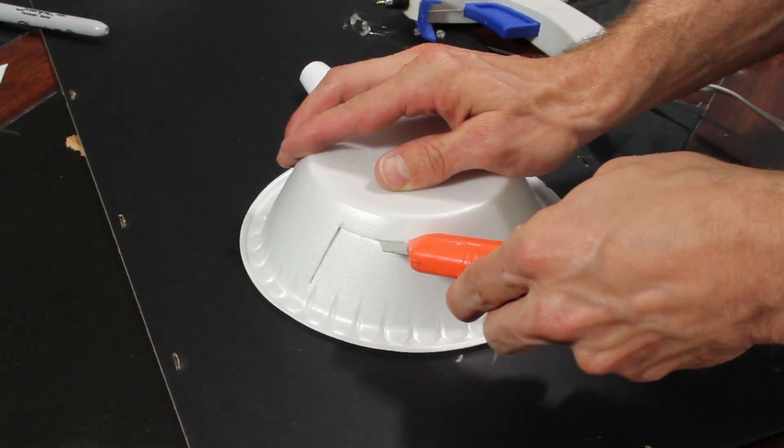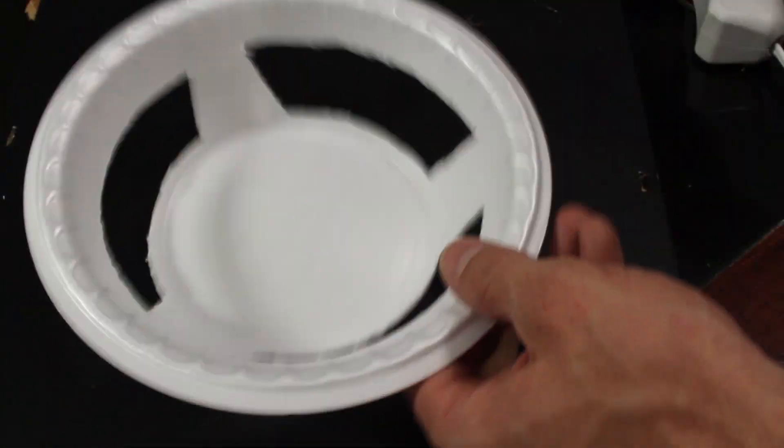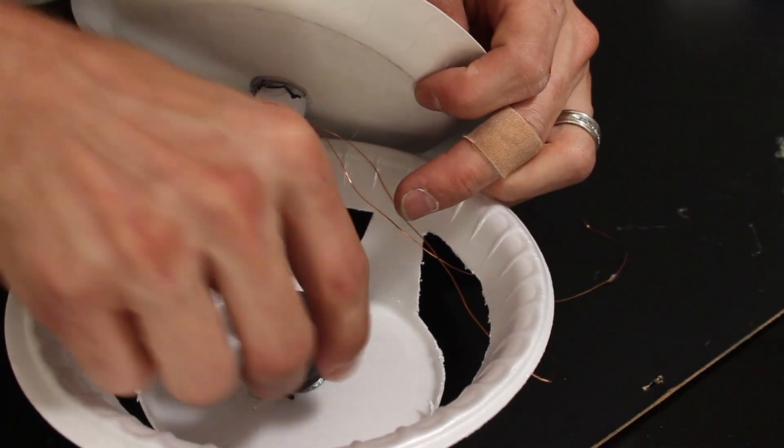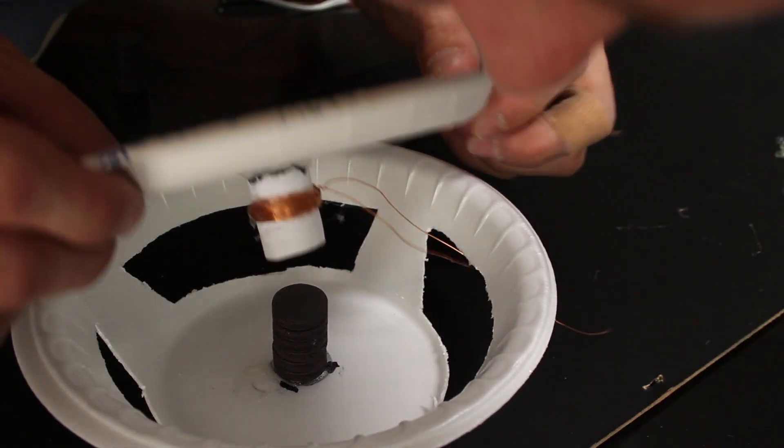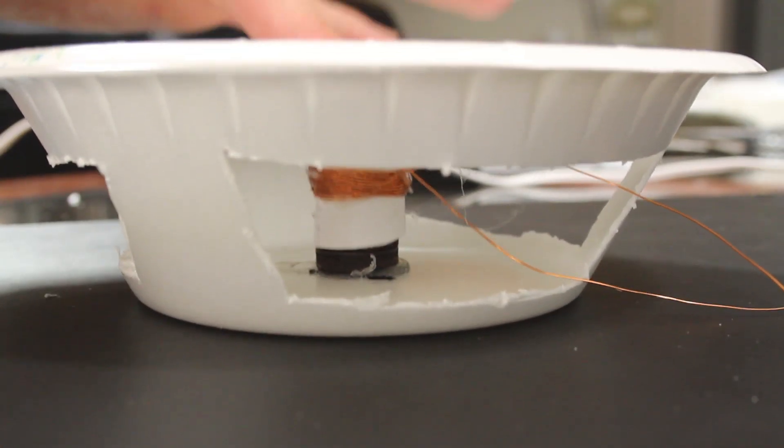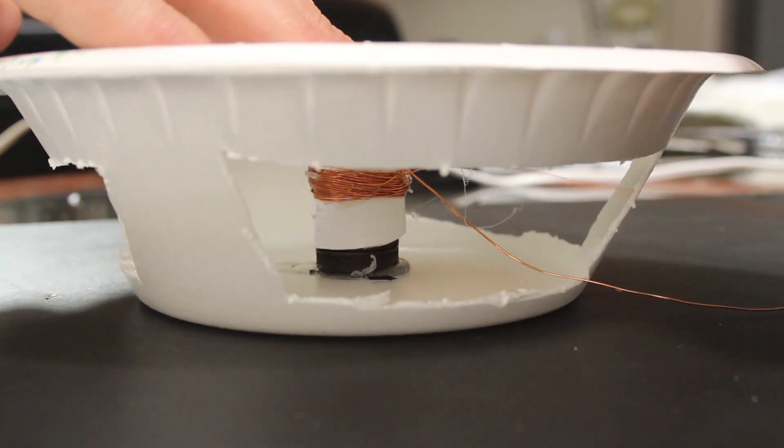While that's drying, we can cut some holes in the sides of the bowl to make it look more like a proper speaker basket. The next step is to hot glue our magnet stack to the bottom and slide the coil over top to see how it fits. It moves freely because of the gap we made earlier, and it's looking good.